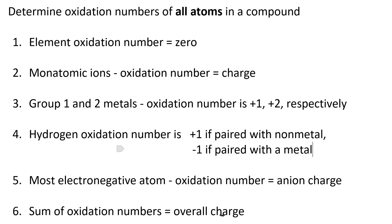You need to determine the oxidation numbers for every atom in a compound given a chemical formula. Here are the rules. Rule one: the oxidation number of a pure element is zero. Rule two: for a monatomic ion, the oxidation number equals the charge. Rule three: for group one and two metals, the oxidation number is plus one or plus two when they're in a compound. Rule four: for hydrogen, it depends on whether the other atom is a metal. Rule five: the most electronegative atom gets the oxidation number equivalent to its monatomic anion charge. Rule six: the sum of the oxidation numbers equals the overall charge.